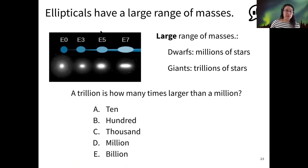So just to get you thinking about the numbers here a little bit, how many times larger than a million is a trillion? All right, so don't worry if you didn't know the answer to this, we're going to practice with large numbers on Monday. The answer here is million times larger. So a million is 10 to the power of six, and a trillion is 10 to the power of 12. So a trillion is a million times larger than a million. We'll go over exactly how the math works for this on Monday.